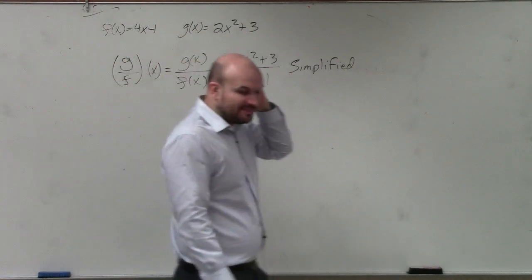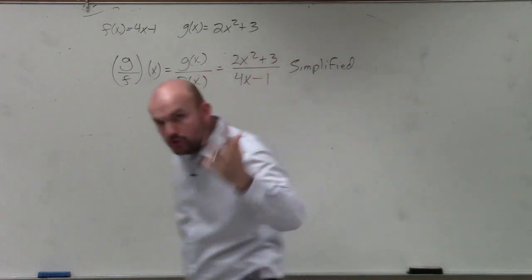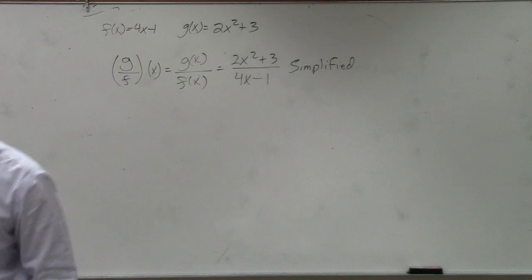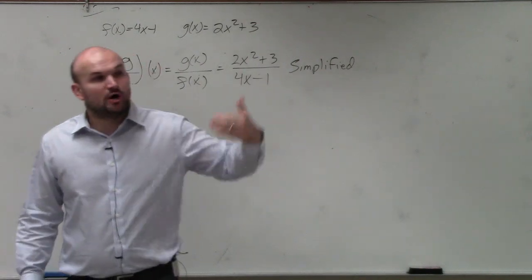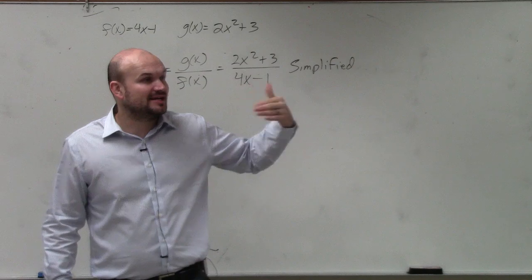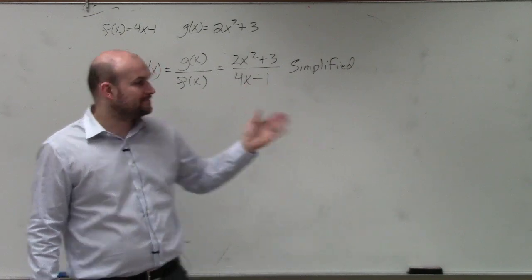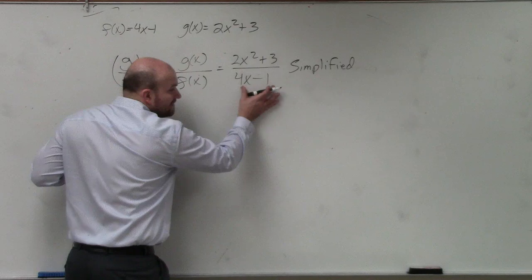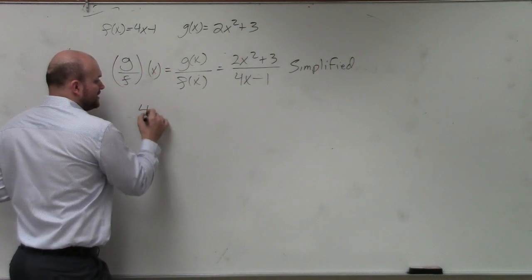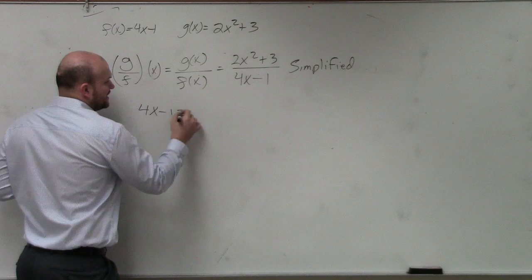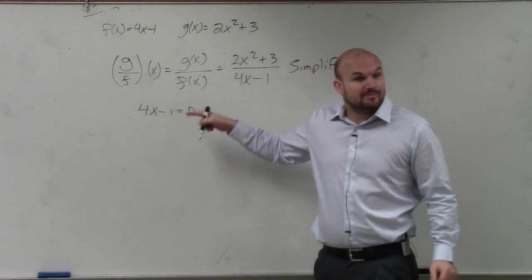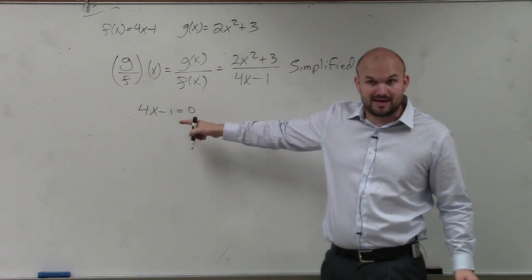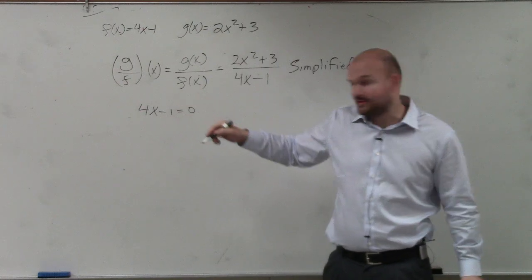The next thing is to find our domain. We talked about two restrictions: if you have a variable in the denominator, the variable cannot make your denominator equal to 0; or if you have a variable under a radical, that variable cannot make your radicand less than or equal to 0. We have a variable in the denominator, so all you're simply going to do is take your denominator and set it equal to 0. We want to find the values of x that make our denominator equal to 0 — because those values cannot be in our domain.